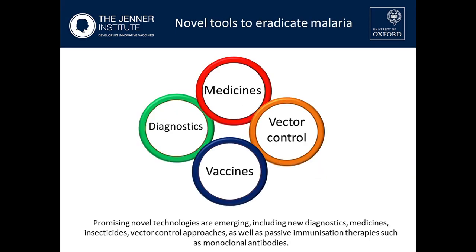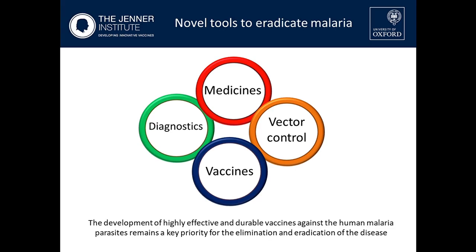The scientific community is developing novel technologies to tackle this disease. These include new diagnostics and medicines — especially those tackling parasite resistance — as well as vector control, new insecticides and chemicals for bed nets or spraying walls, passive immunization therapies such as monoclonal antibodies. Last but not least, there are vaccines. The international community agrees that the development of a highly effective and durable vaccine would be key in the elimination and eradication of the disease.